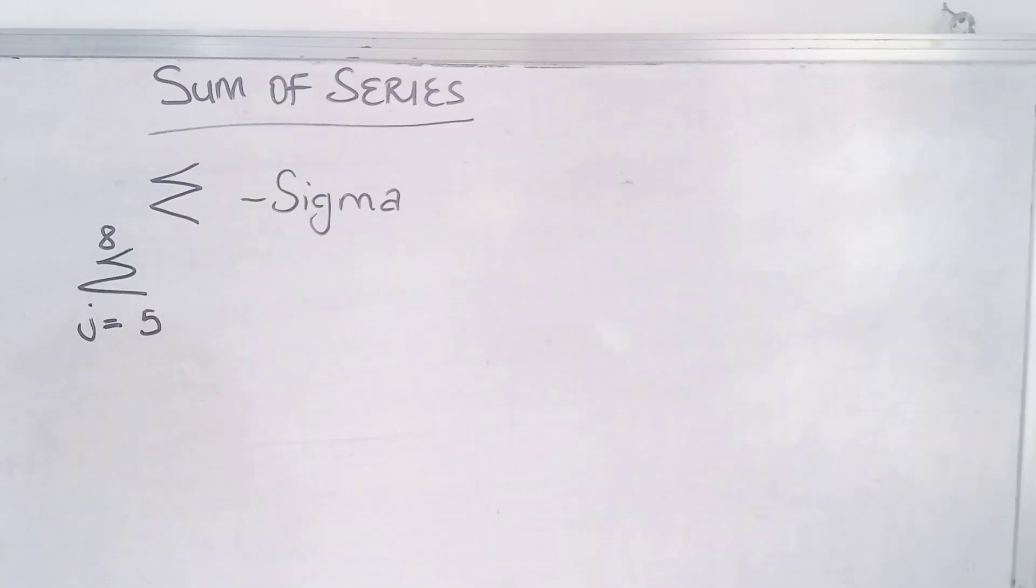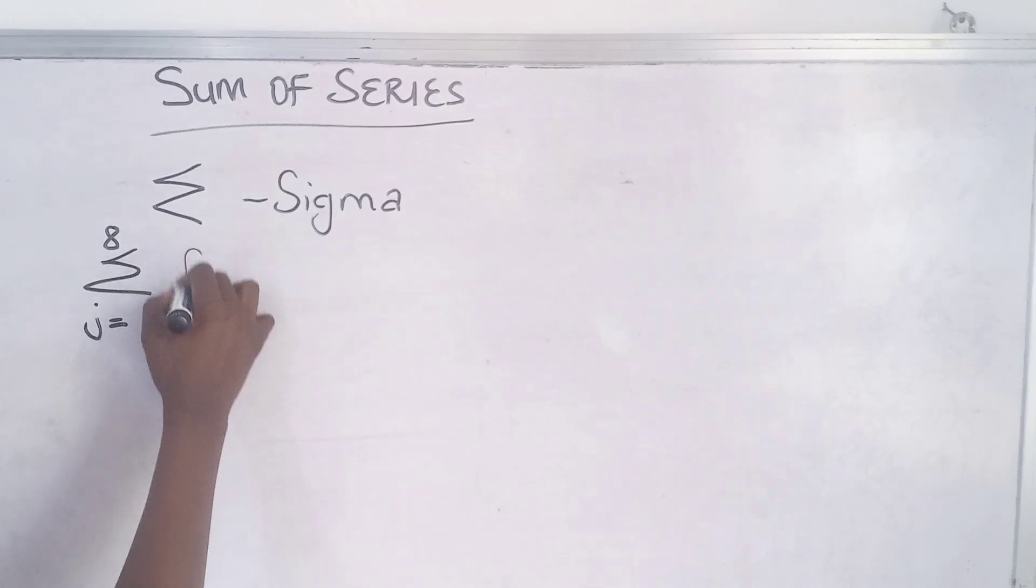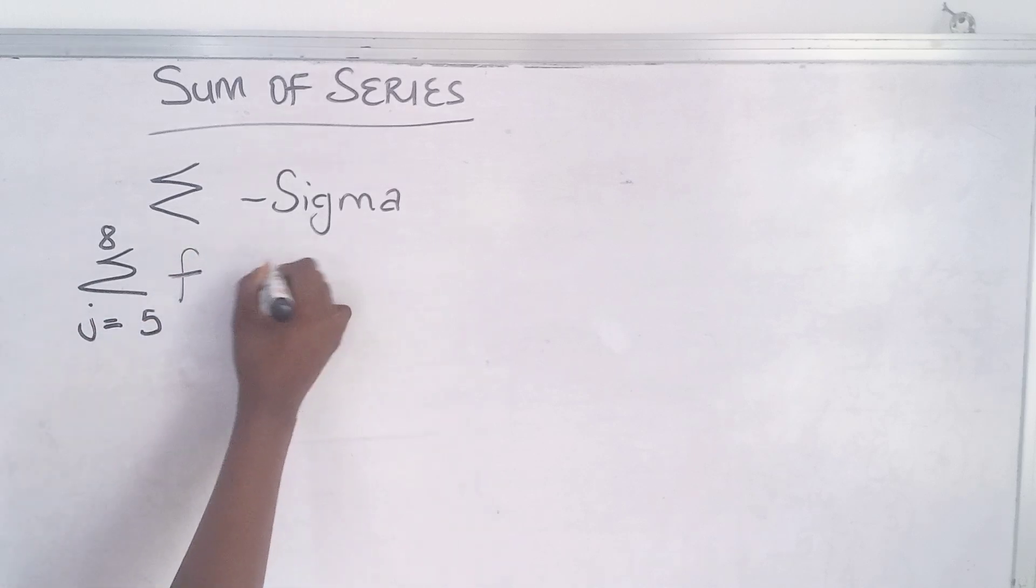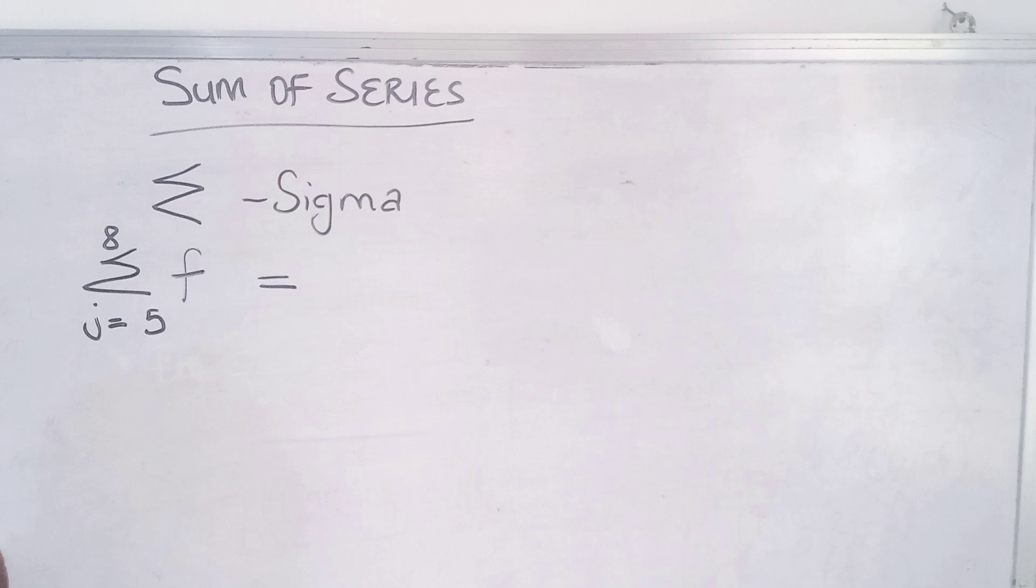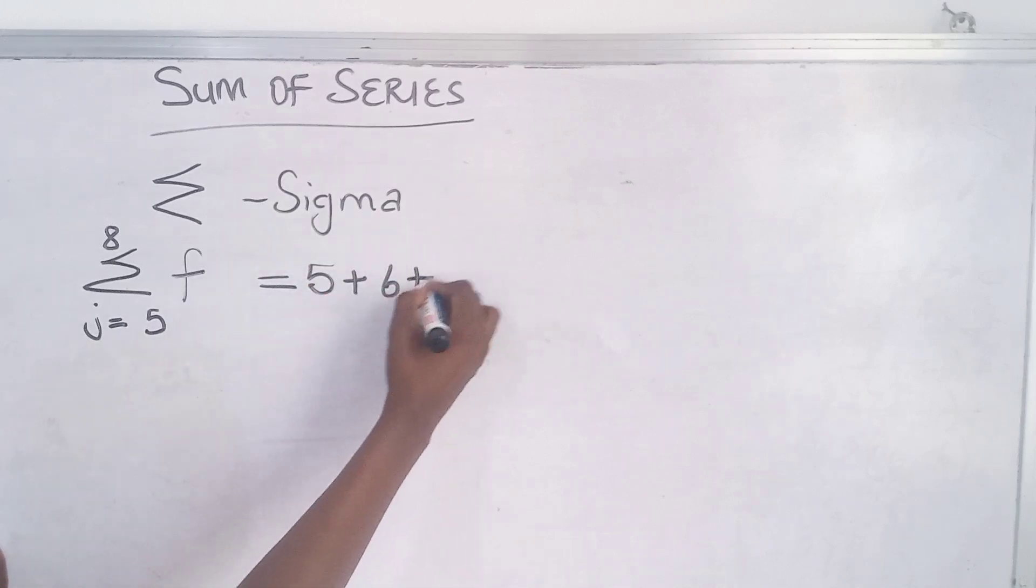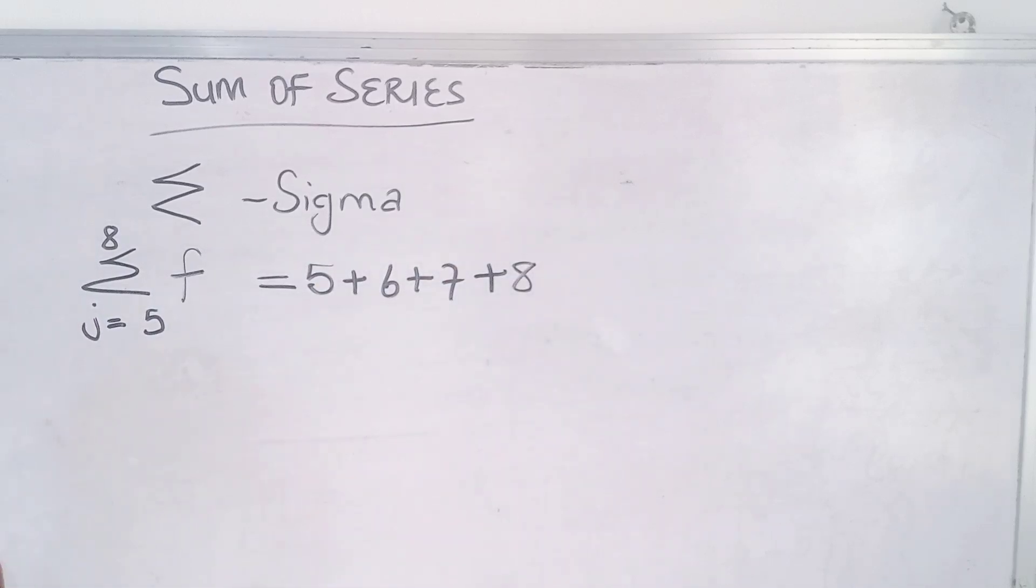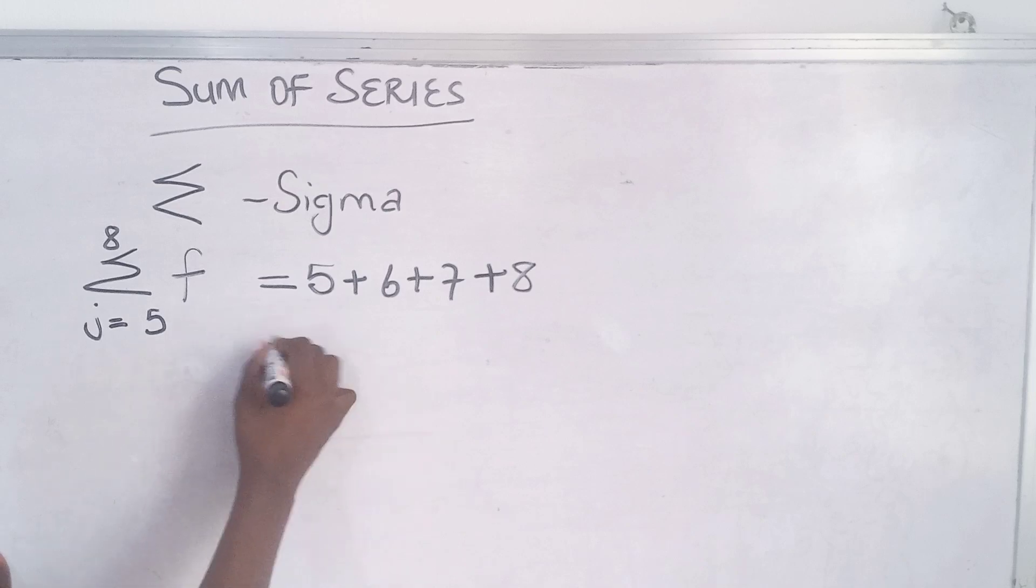You could be given a question like this where you have summation of f such that j ranges from 5 to 8. What does this mean? This means that this is a function such that you keep adding starting from 5 and stopping at 8.